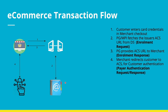The PG works with the directory server and passes the card number and bin details, etc. And the directory server will send back the registered ACS link back to the payment gateway. And the payment gateway will provide it back to the merchant website. And the merchant website now redirects to the ACS link.